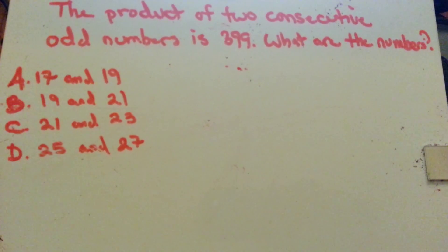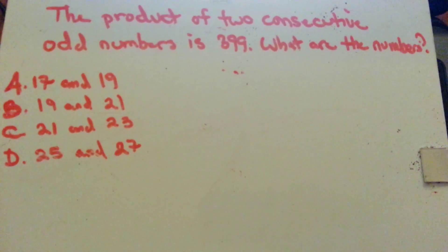The product of two consecutive odd numbers is 399. What are the numbers?